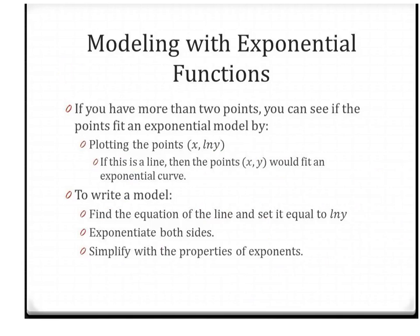You'll have all your ordered pairs, however many data points you collected. You're going to plot x versus ln(y) — take the natural log of every y-value and plot those. If this gives you a line or something really close to a line, then the original points (x, y) follow an exponential curve. To find the equation, you find the equation of that line, set it equal to ln(y), then exponentiate both sides with e to get just y, and simplify using properties of exponents.